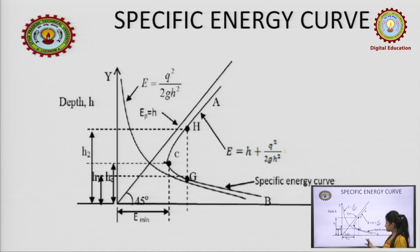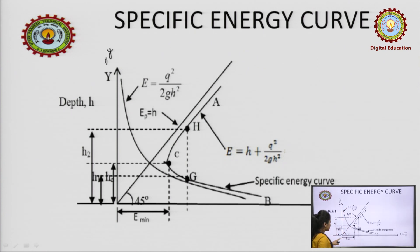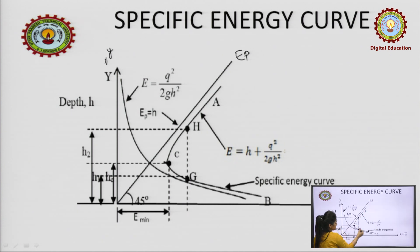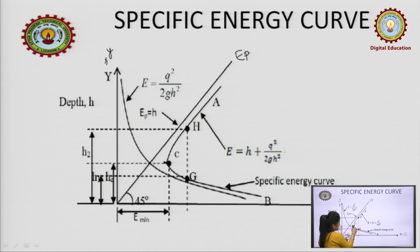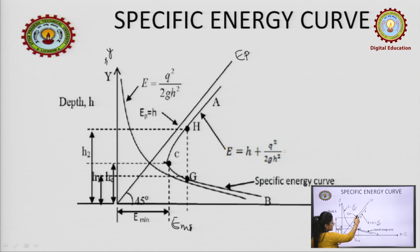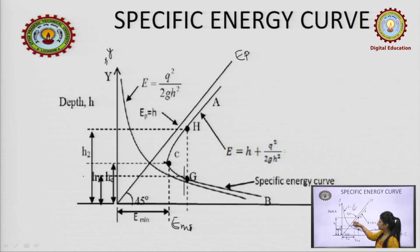To summarize the final plot: the x-axis is E (specific energy) and the y-axis is depth. First we draw Ep (potential energy line), then Ek (kinetic energy parabola), then we combine them to get the specific energy curve. At the intersection of Ep and Ek lies the critical depth yc, and at that point lies the E minimum value. At all other points on the curve, there are two alternate depths — one in the supercritical zone and one in the subcritical zone, represented as y1 and y2.